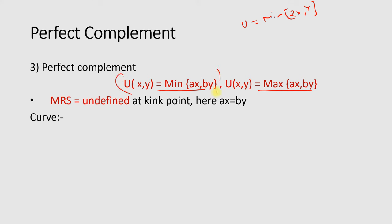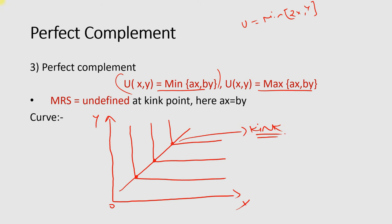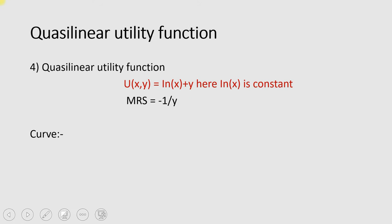If you want to find the marginal rate of substitution in the perfect complement case, you have to look at the diagram. The perfect complement diagram is L-shaped because a consumer purchases two goods at the same time, or in a pair. At the kink point, the marginal rate of substitution is undefined, and at this point ax equals by.